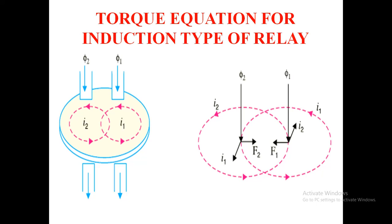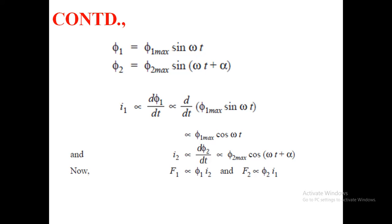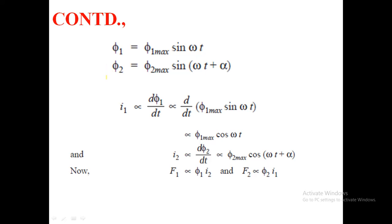This is the torque equation of the induction type relay. There are two different fluxes: φ1 = φ1_max × sin(ωt) and φ2 = φ2_max × sin(ωt + α). The current produced will be equal to the change in flux with respect to time. Substituting φ1, after differentiating, we get I1 proportional to φ1_max × cos(ωt). Similarly for current I2, directly proportional to the change in φ2 with respect to time.